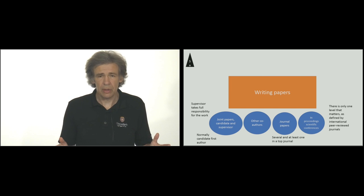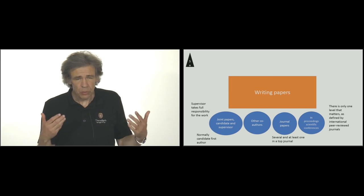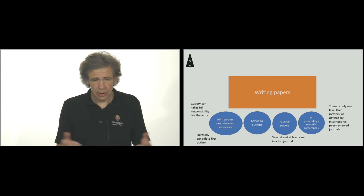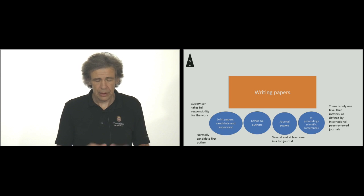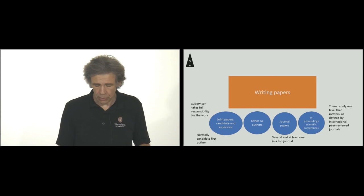You should aim at at least one journal paper in the thesis. It could be more, it should be more, but one at minimum. You could also have papers in scientific conference proceedings, but the key is to get some journal papers and be accepted as early as possible in the work.